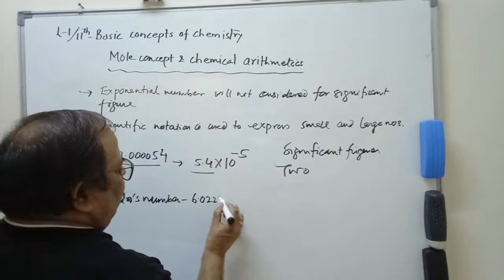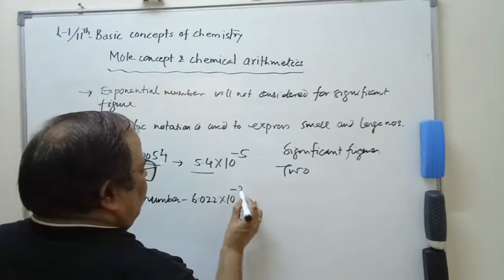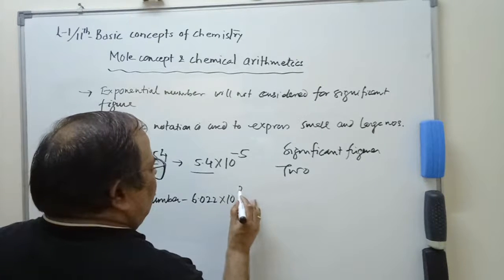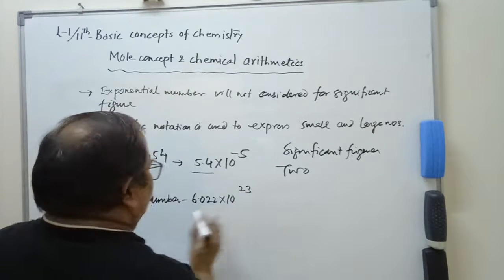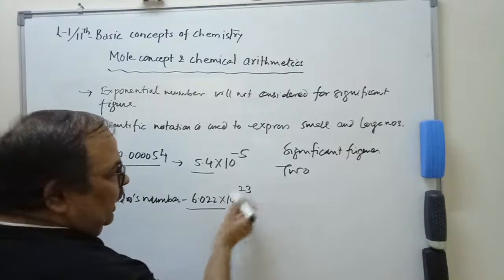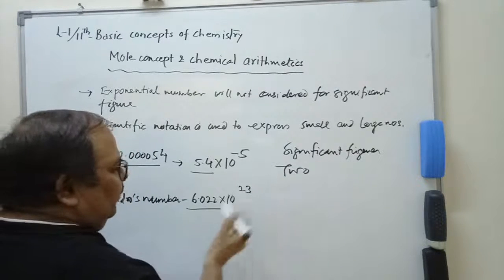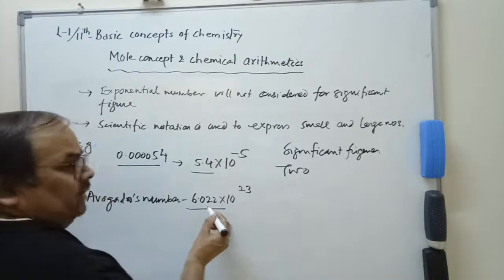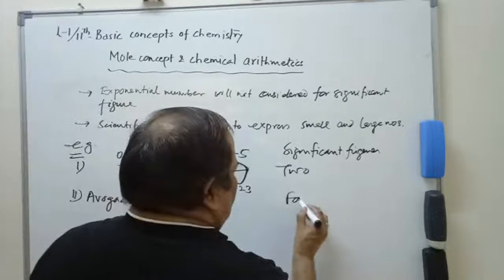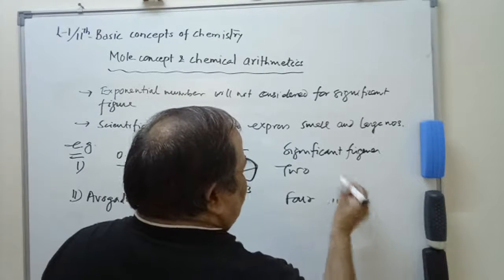Second example: 6.022 into 10 to the power 23. The exponential term will not be considered for the significant figure. How many significant figures? Four significant figures.